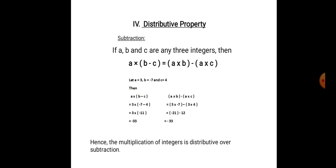On the right hand side, a into b minus a into c — substituting the values, you get 3 into minus 7 minus 3 into 4. 3 into minus 7 is minus 21. 3 into 4 is 12. Minus 21 minus 12 is minus 33. Hence, multiplication of integers is distributive over subtraction.